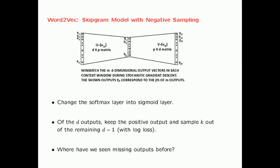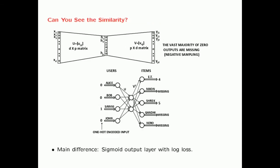What you can do is that you only keep the single positive output. Note that among the outputs only one will be one and the others will be zeros, and you sample k out of the remaining d-1. The other outputs are assumed to be missing. You don't use them in backpropagation. Where have we seen missing outputs before? You can go back to the previous lecture and I have replicated the architecture here. Do you see the similarity between the two architectures? The upper one is Word2Vec, the lower one is recommender systems with missing ratings.